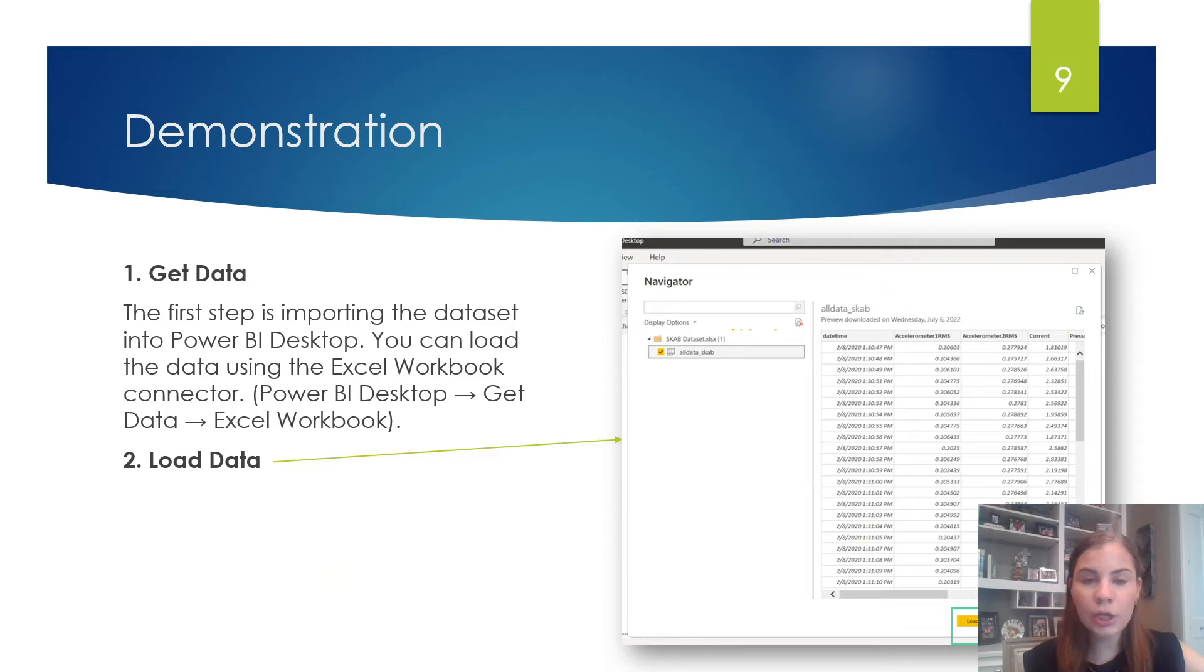So in order to get started building out our anomaly detector, our first step would be to go ahead and get our data into Power BI Desktop. In order to do that, since we are using an Excel workbook, we are just going to load the data in using the Excel workbook connector in Power BI Desktop. So we would just go to get data and then Excel workbook. From there, we would simply select the sheet that has our data and load it into Microsoft Power BI.